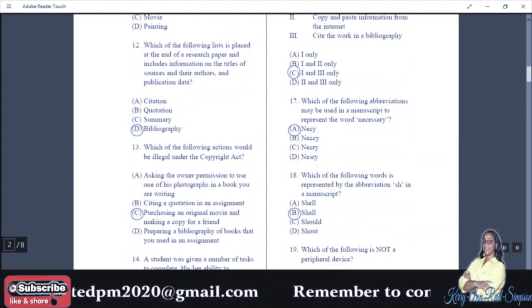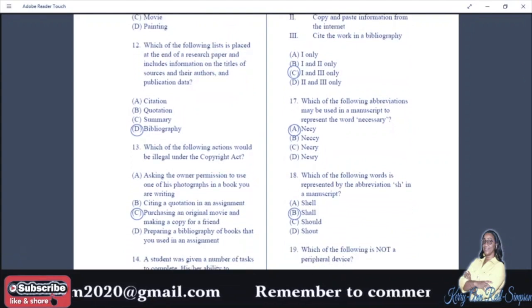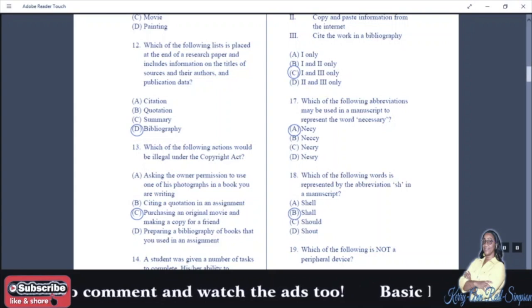Number 12: which of the following lists is placed at the end of a research paper and includes information on the titles of sources and their authors and publication date? Your answer is bibliography. Bibliography is what you find at the end of a research paper or reference page.